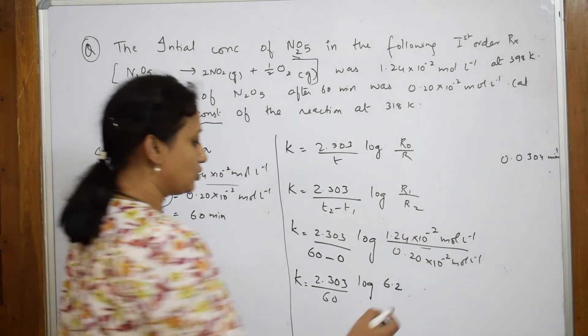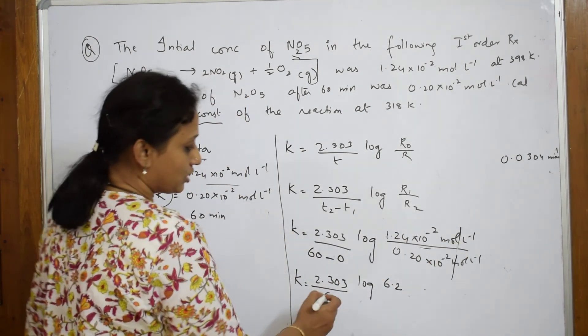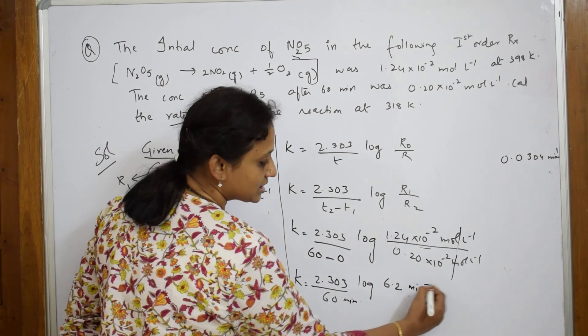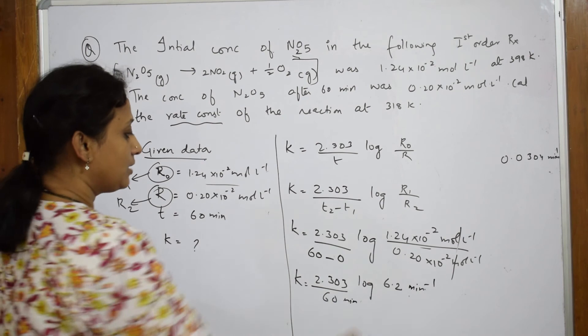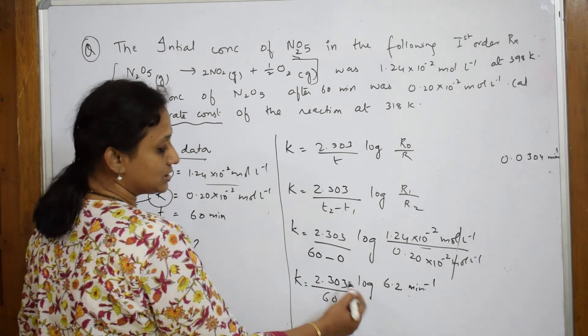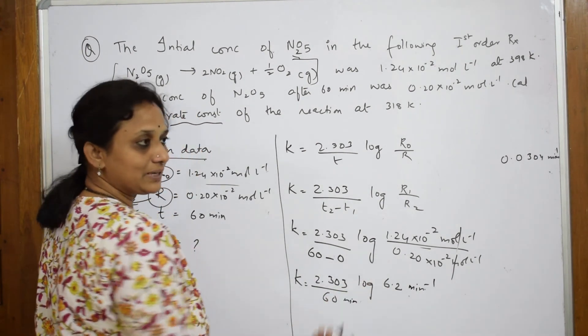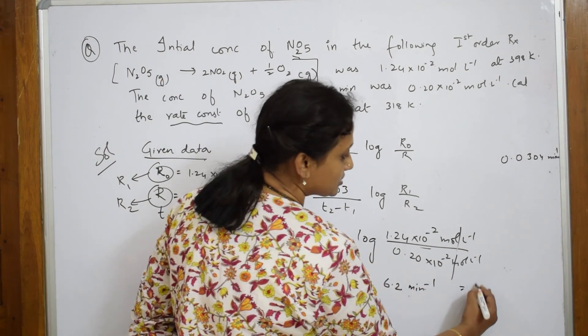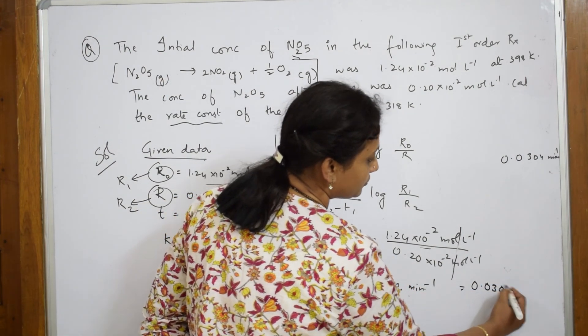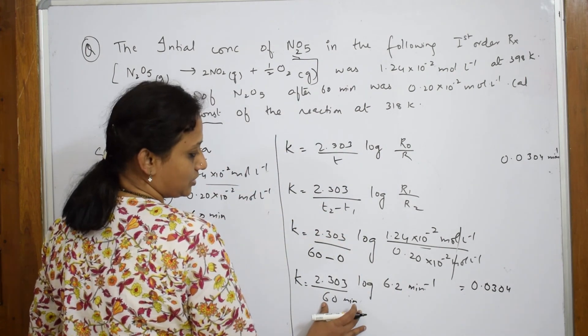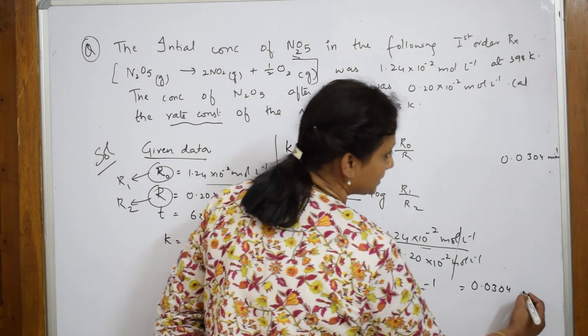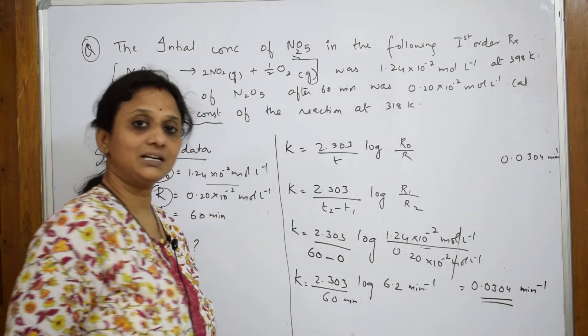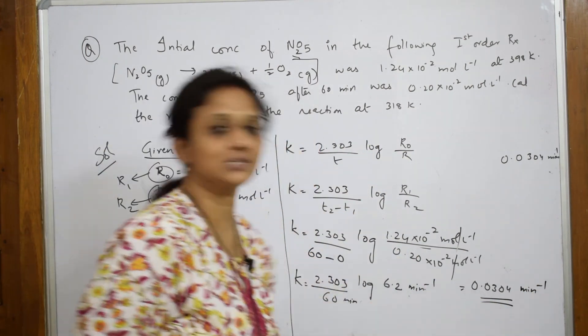When you solve this, you get an answer of log 6.2. You just solve this because mole and mole get cancelled and what are we left with? You're left with minutes. When this goes up, this becomes minute inverse. When you solve this whole thing, first try to solve this, find this log value, multiply with that and if you just further simplify, you get an answer of 0.0304 minute inverse. And the unit for the first order rate constant is time inverse.